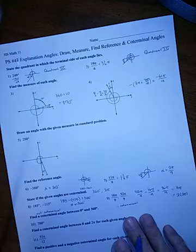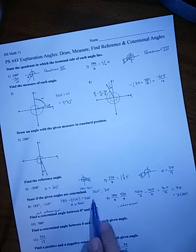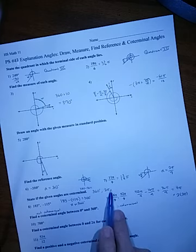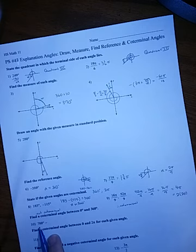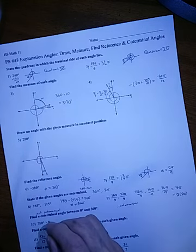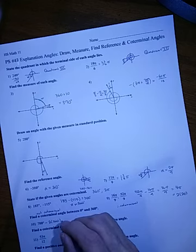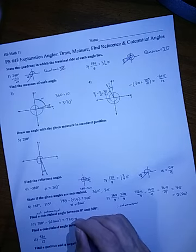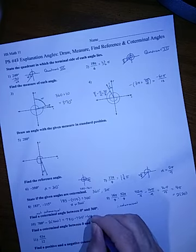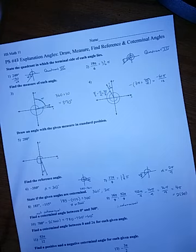If we're asked to find a coterminal angle between here, we get coterminals by adding or subtracting any number of multiples of these. So I would try subtracting one 360 or two. If I subtract one 360, that's still not going to be between here. If I subtract two 360s, that would be 780 minus 720. And we would end up with 60 degrees. So these two angles, 60 and 780, are coterminal.